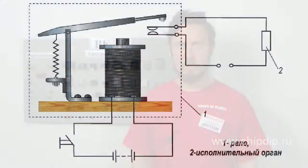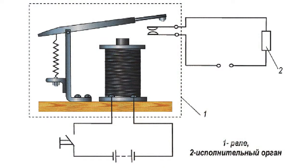Different electromagnetic relays are widespread in modern automatics and teleautomatics. An electromagnetic relay is a very simple device — a regular electromagnet with an armature hinged to it. When the coil passes a current, the armature is attracted to the core and closes special contact plates, switching on or off certain devices in electrical circuits.